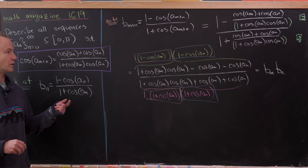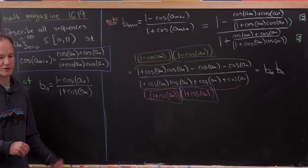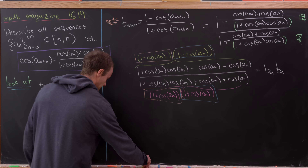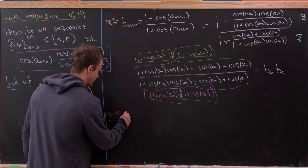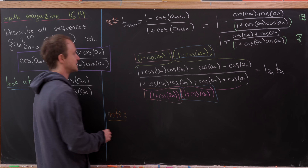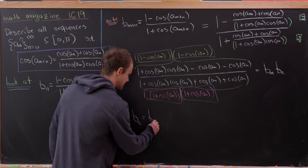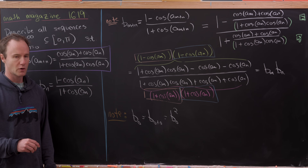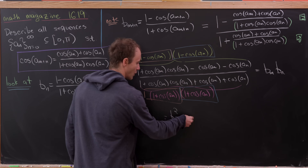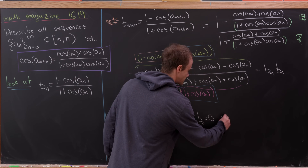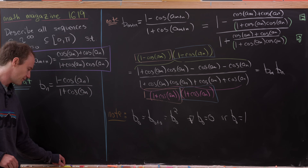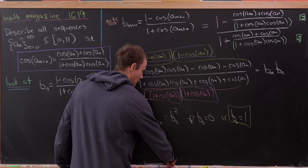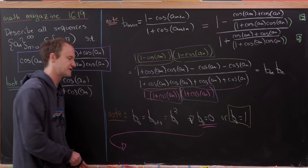The b sequence has this nice addition-to-multiplication property. Now let's observe that b_0 equals b_{0+0} equals b_0 · b_0, i.e., b_0 squared. There are only two real numbers that square to themselves: 0 or 1. So b_0 equals 0 or b_0 equals 1. Before we look at the main case b_0 = 1, we can take care of b_0 = 0.